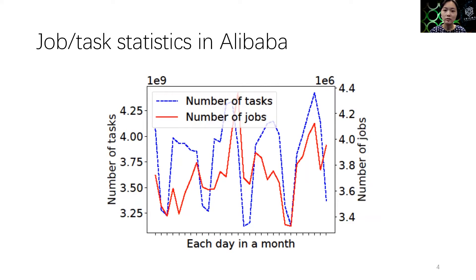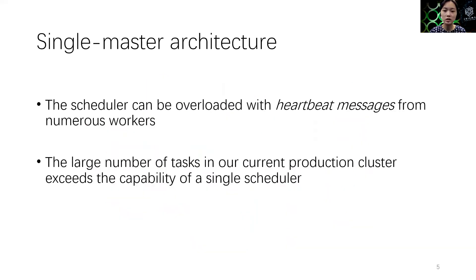The solid line in the figure plots the number of jobs processed in the cluster, which ranges from 3.3 to 4.4 million each day. A job consists of many tasks, and the dotted curve in the figure plots the number of tasks each day, which ranges from 3.1 to 4.4 billion. Most tasks are short tasks, and 87% of the tasks are completed in less than 10 seconds.